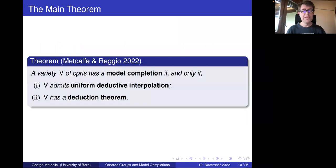The main theorem I want to discuss today is that a variety — an equational class — V of CPRLs has a model completion if and only if it admits uniform deductive interpolation and has a deduction theorem. And obviously I owe you definitions of these terms.